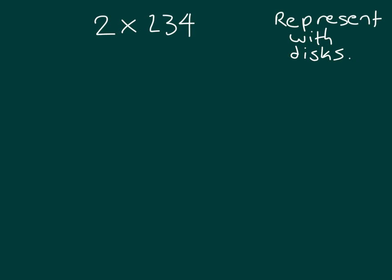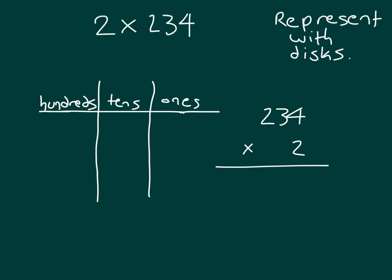Let's do that vertically. So let's write 234, and in which case we're multiplying by 2. We'll represent it with a disk by using a place value chart where we have hundreds, tens, and ones. First off, we're looking at 234. Remember, we're multiplying by 2.